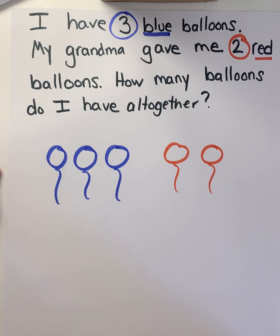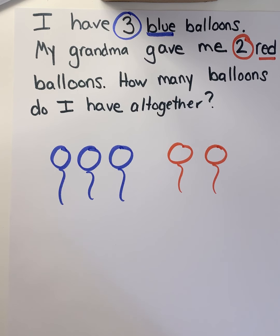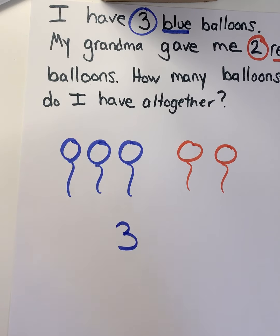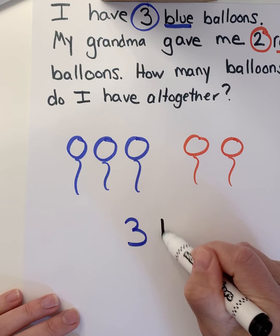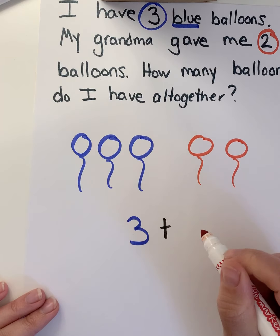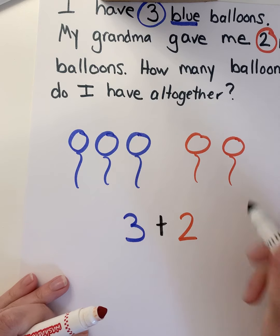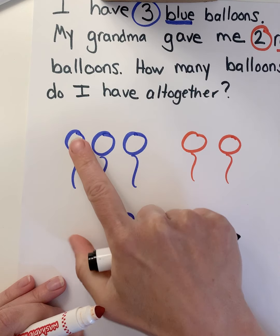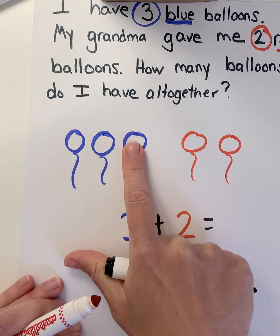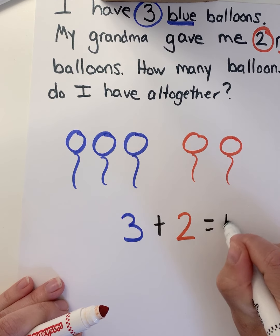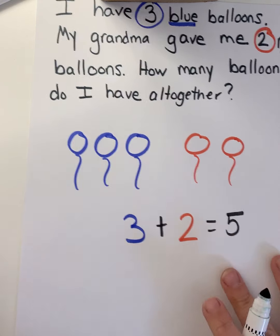Now I'm going to write a number sentence to match my picture. How many blue balloons do we have? One, two, three. And how many red balloons do we have? Two — one, two. And what does three and two make all together? Let's count: one, two, three, four, five. So three plus two more equals five.